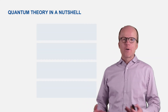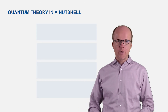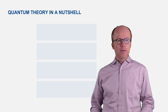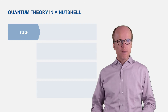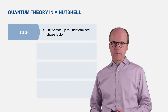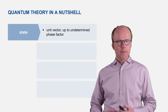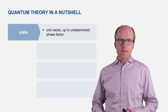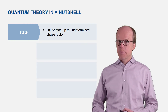Now we've assembled all the important ingredients to formulate the mathematical framework of quantum theory. There are four basic ingredients. To begin with, the state of a quantum system is described by a unit vector in Hilbert space, up to some undetermined phase factor. This means that if a unit vector V describes a particular quantum state, then e to the i-phi — where phi is an arbitrary angle — times V describes the same physical quantum state.